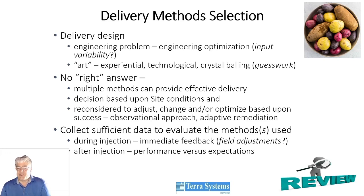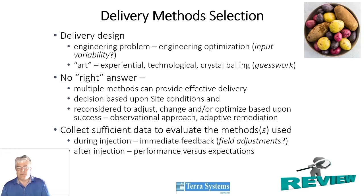How do you observe performance? During injection you get feedback — information on pressures, flows, availability of material going into the ground, short-circuiting, etc. After injection you get performance data to evaluate the application process against expectations. You look at a feedback loop: how did it do, did it work as expected, and if not, why not? That 'why not' gives you information on your conceptual model. It's very important to collect data during and after injection to evaluate and refine your approach, and change it as needed going forward.